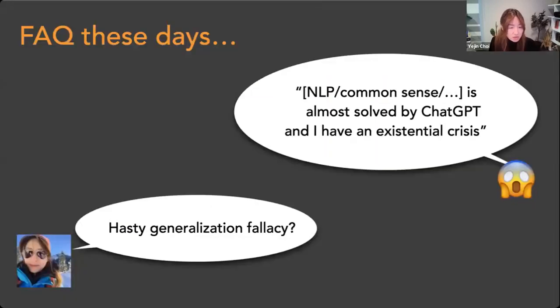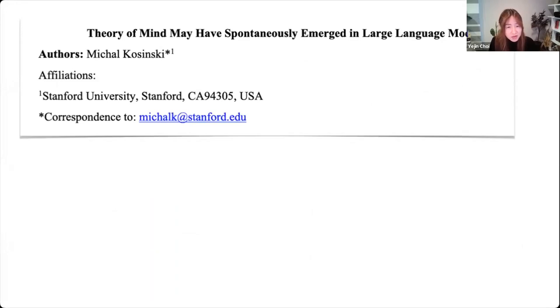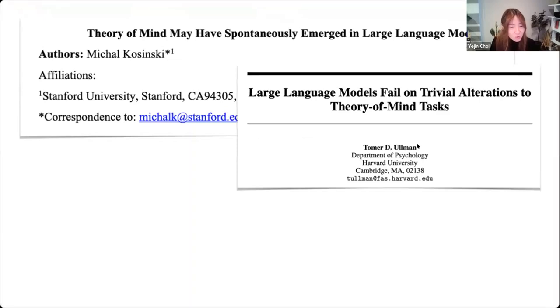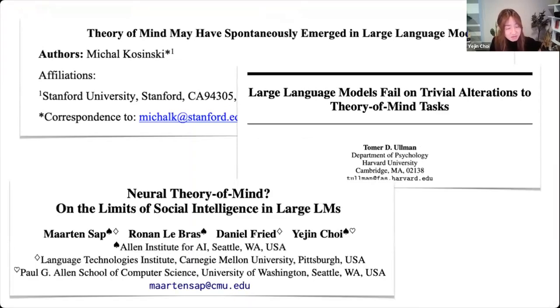So frequently asked the questions these states is that whether NLP or common sense has been almost dissolved by chat GPT. And I'll say there may be a hasty generalization policy. So one such case is this report on whether theory of mind may have spontaneously emerged in large language models, due to a psychologist at Stanford, because they tested 20 elaborate questions, and GPT-3 was able to answer all of them correct. So, you know, maybe it's all good or not. So there were these rebuttal papers that in fact, if you twist those examples a little bit, then language models fail. So it's important, especially these days to try different examples, because language models can randomly fail.